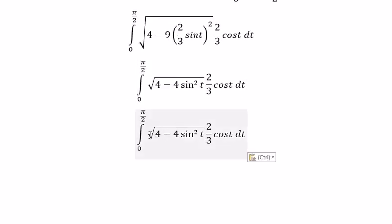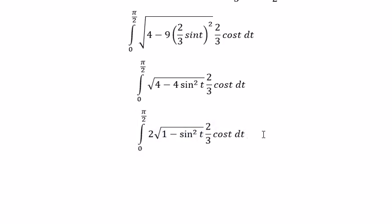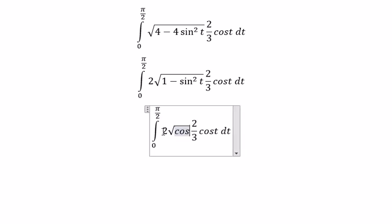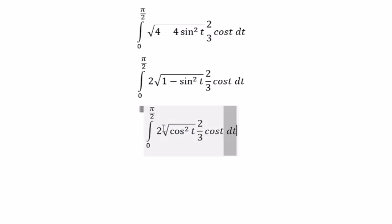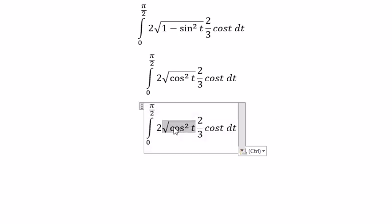The square root of 4 gives you 2 outside. This one, we change for cosine t square. This gives you cosine t.